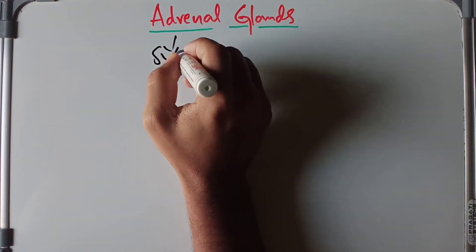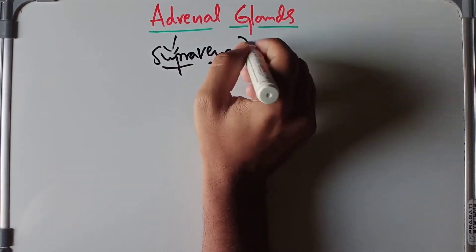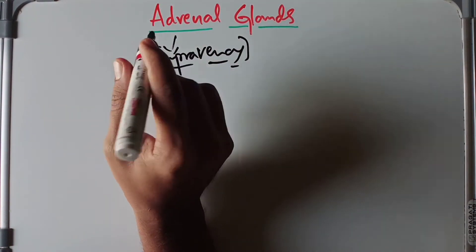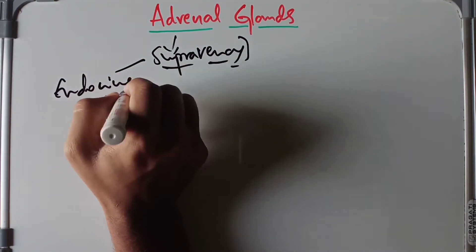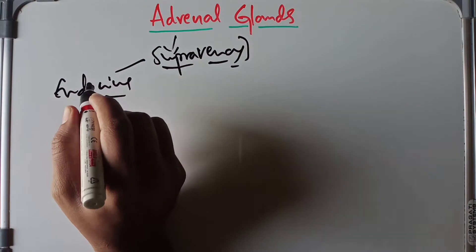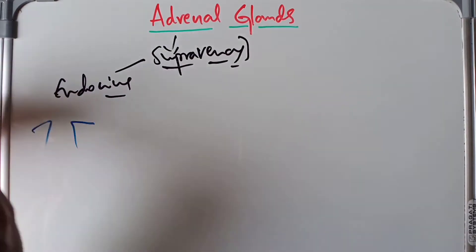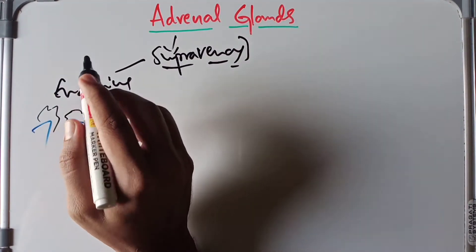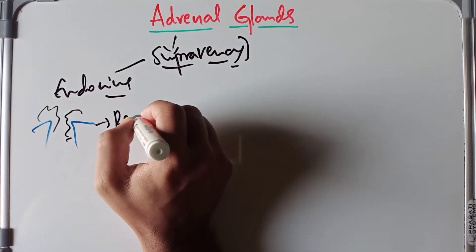The adrenal glands are also called the suprarenal glands. 'Suprarenal' just means above the renal, that is above the kidney. The suprarenal glands are an important pair of endocrine glands situated on the upper poles of both kidneys, within the same fascial sheath as the kidneys — the renal fascia.